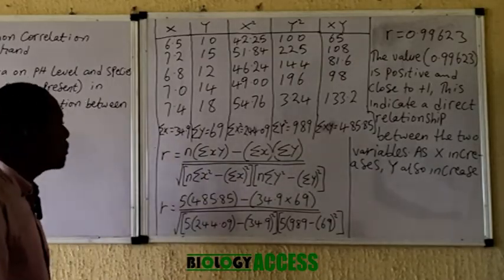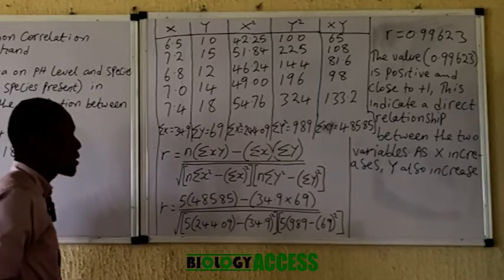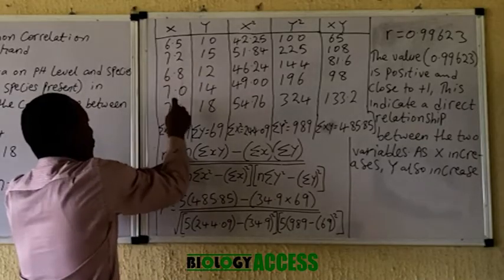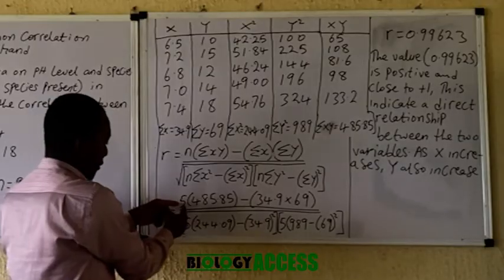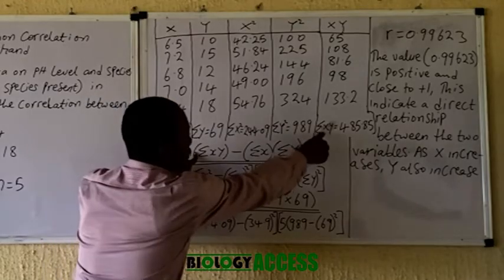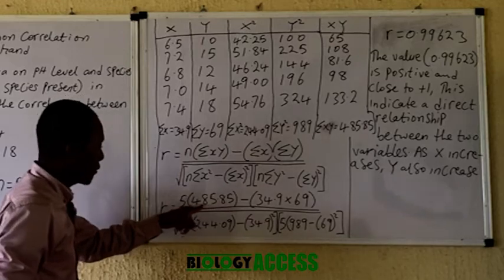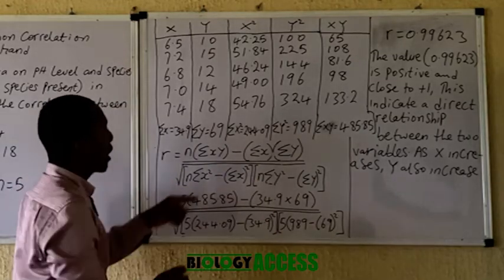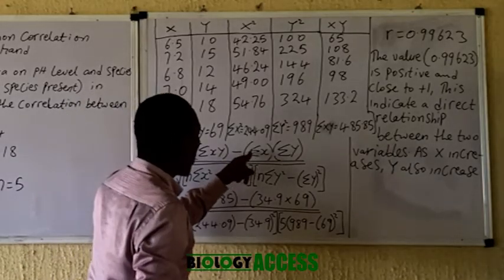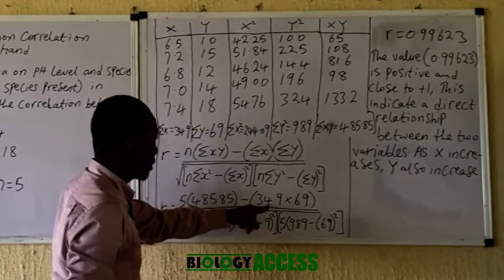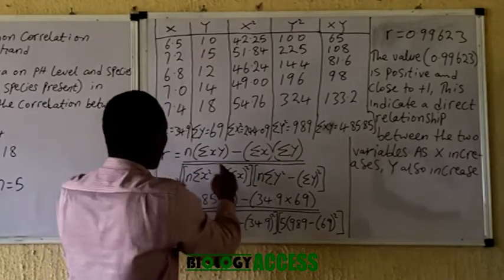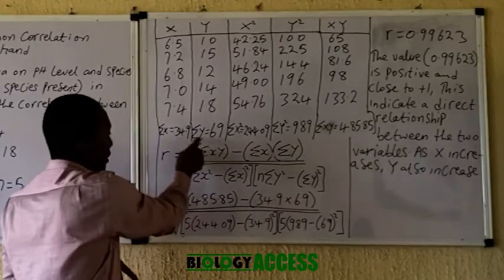Now plug the values into the formula for Pearson's correlation coefficient. In the numerator: n times the sum of xy, minus the sum of x multiplied by the sum of y. Since both are in brackets, you multiply sum of x by sum of y and subtract. n equals 5, and you substitute all the calculated sums into their respective positions in the formula.